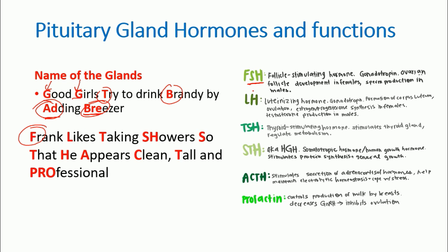F gives us FSH — follicle stimulating hormone — which acts on the gonad (G). L gives us LH — luteinizing hormone — which also acts on the gonad; both are gonadotropins. T and SH together give us TSH — thyroid stimulating hormone — which acts on the thyroid gland. 'Taking shower' helps you remember T-S-H quite easily.